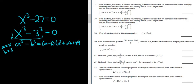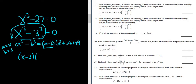So this whole thing becomes: a minus b gives us x minus 3. Then x squared, plus ab which is 3x, plus b squared which is 9, because b is 3. And this is equal to 0.